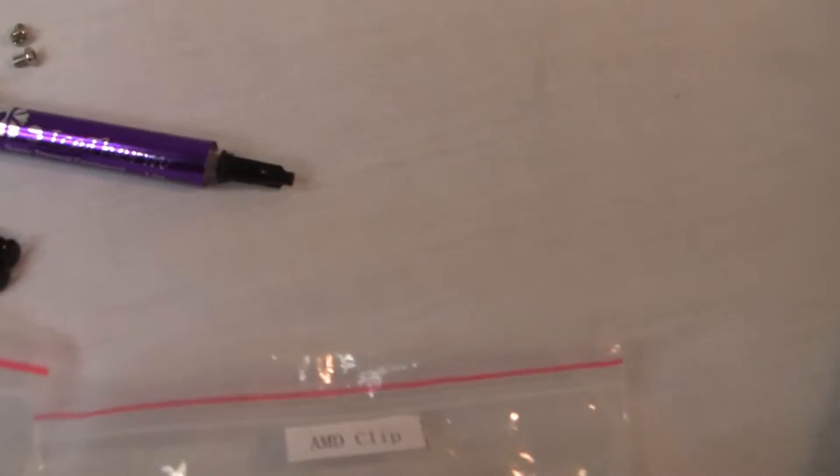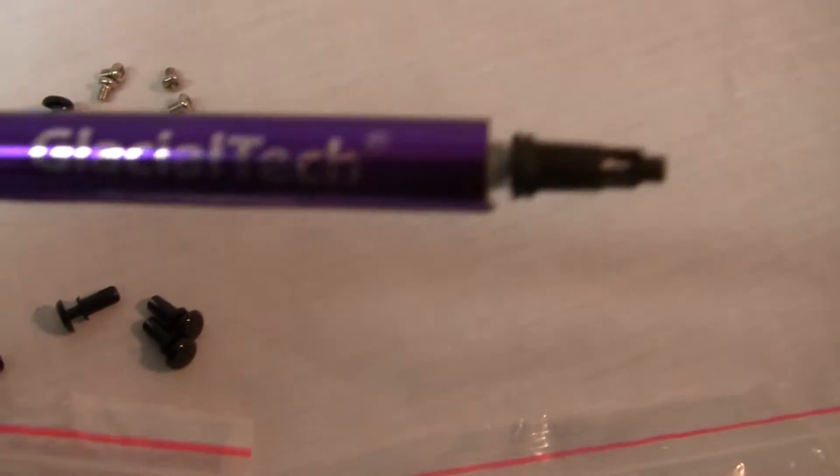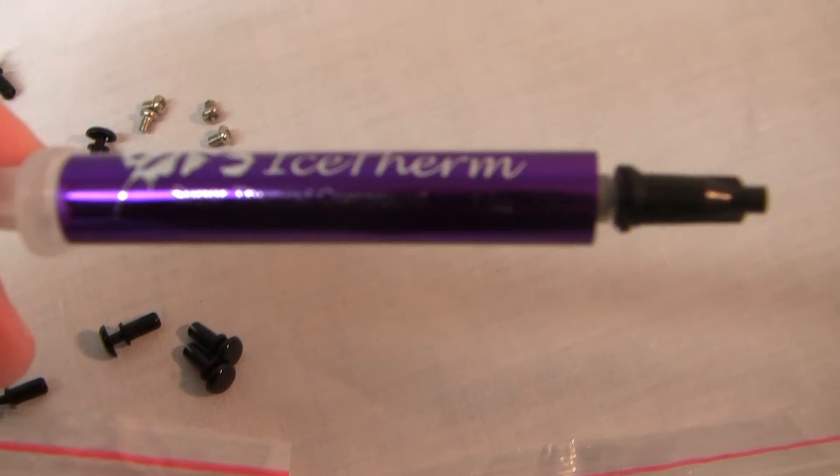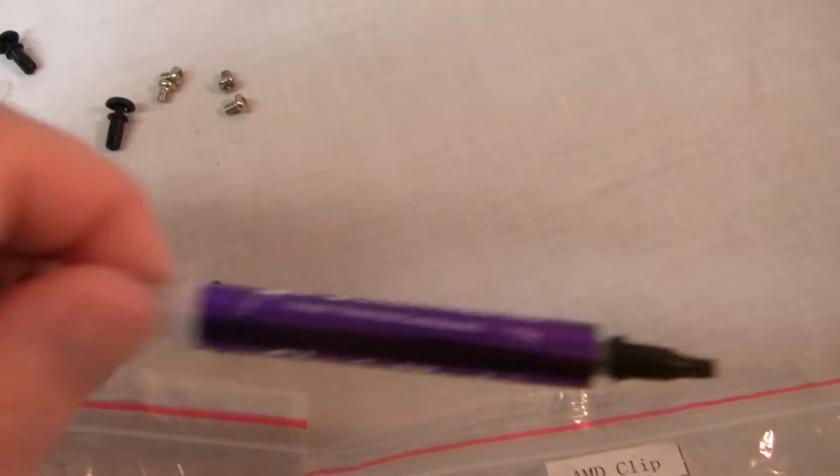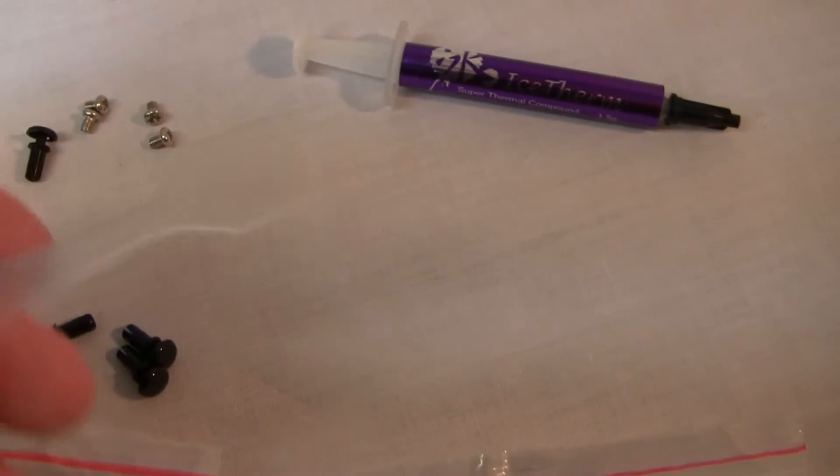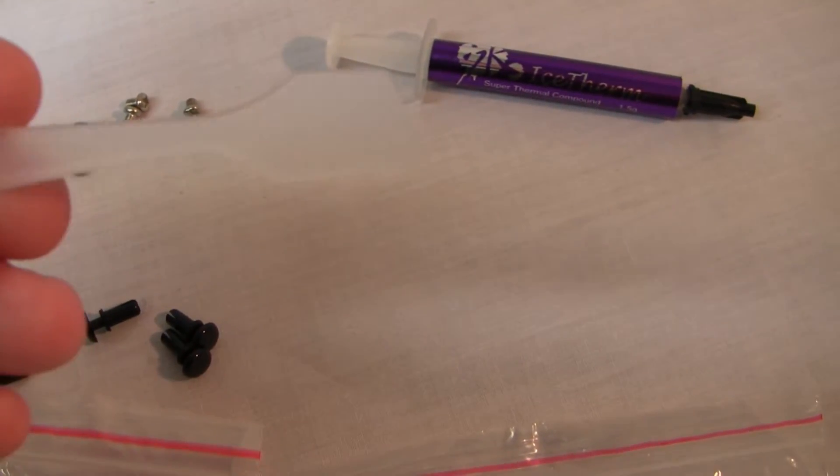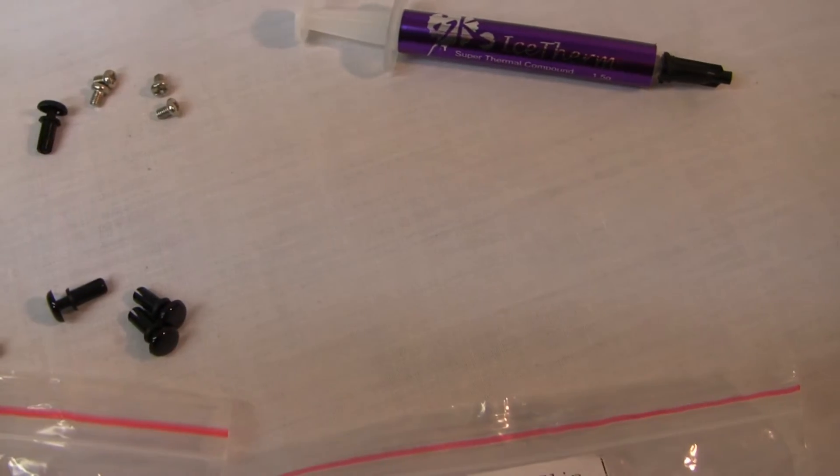You also receive the Glaciotek Ice Therm Super Thermal Compound, one and a half grams of that, and a little spreader to spread that compound around.